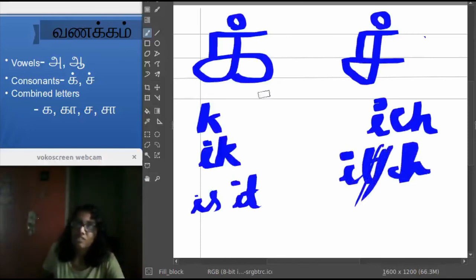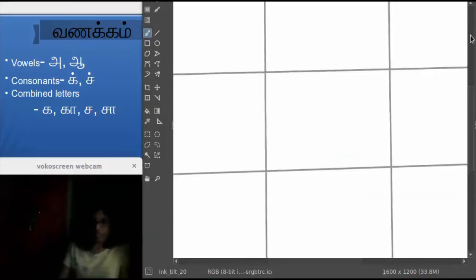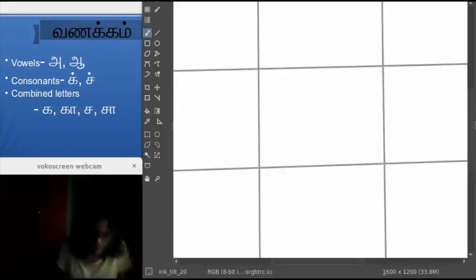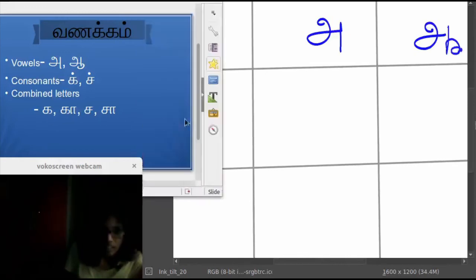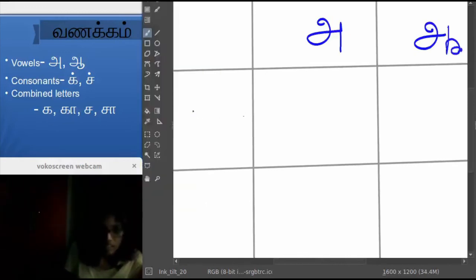So now we have the two consonants, IK and ITCH. So let me write those vowels and consonants one more time here so it will be easy. A, Ā, IK, ITCH.